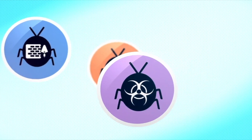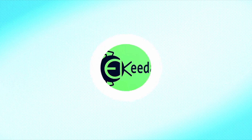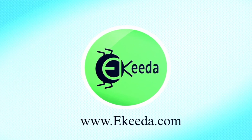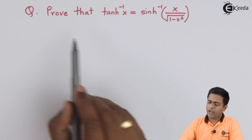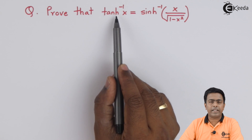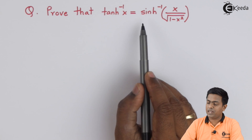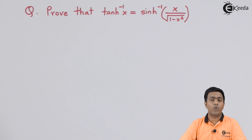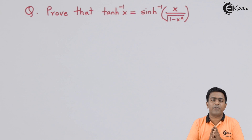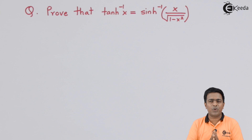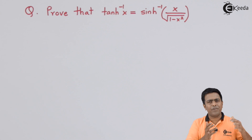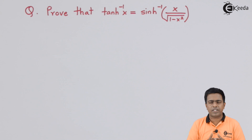Here we have to prove that tanh⁻¹(x) equals sinh⁻¹(x / √(1 - x²)). This means we have to prove the relationship between two inverse hyperbolic functions. Now, how to do that? I'll start with one side — the left hand side.